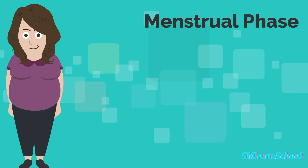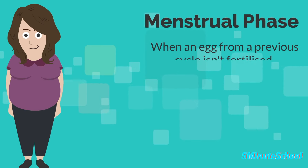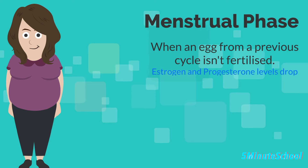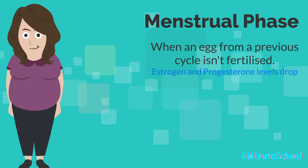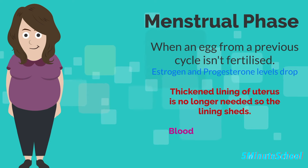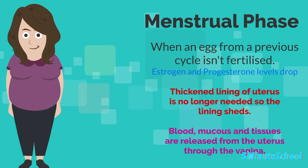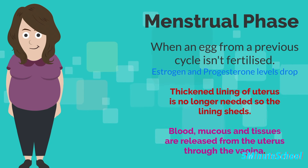The menstrual phase is the first phase. It starts when an egg from the previous cycle isn't fertilized and because pregnancy hasn't occurred, levels of the hormones estrogen and progesterone drop. The thickened lining of the uterus, which was there to support a pregnancy, is no longer needed, so it starts to shed and break down through the vagina, releasing blood, mucus, and tissues.